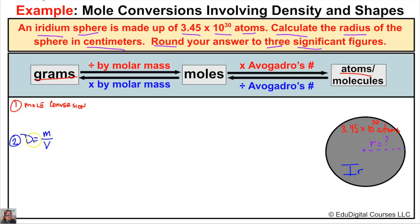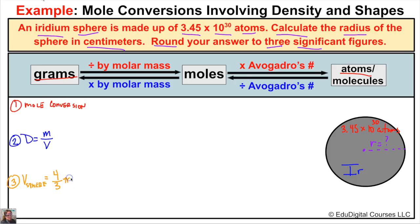If we figure out the mass in step one and plug it into the density formula, and if we look on a table of density values for iridium — we can Google this or look in a textbook — then we can solve for the volume of this iridium sphere. Once we figure out the volume, in our third and final step we take the volume of a sphere. The volume of a sphere, which we learned in algebra or geometry, equals four-thirds pi times r cubed. So if we figure out the volume in step two, we can plug it in and solve for r.